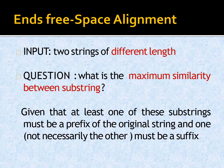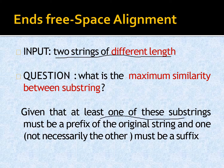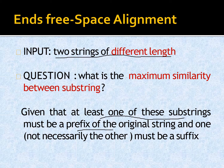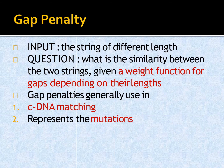If the two strings are of different length, what is the maximum similarity between substrings? This is where end-free space alignment comes in. Given that at least one of these substrings must be a prefix of the original sequence and one must be a suffix. This is not a very popular alignment method; the most popular ones are global and local alignment. If the two strings are of different length, we use end-free space alignment.